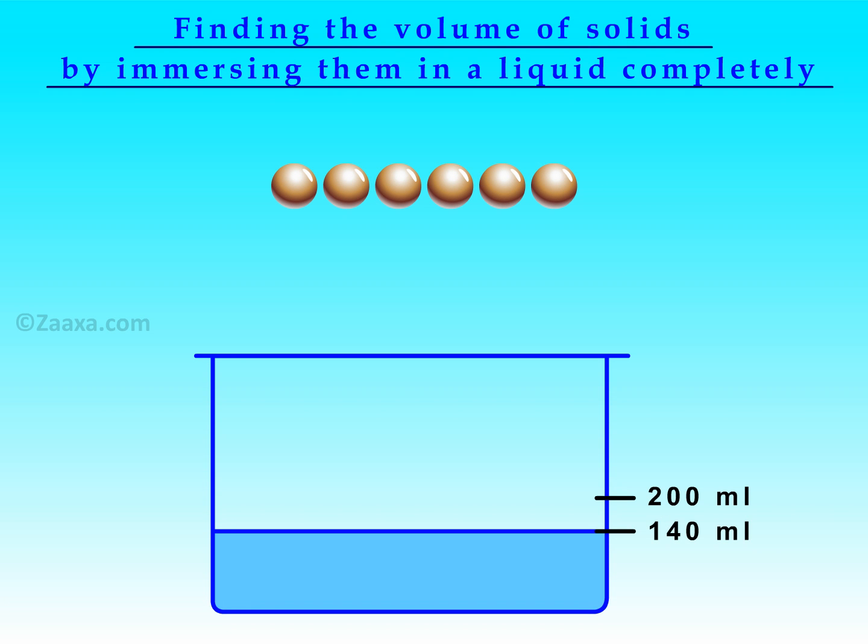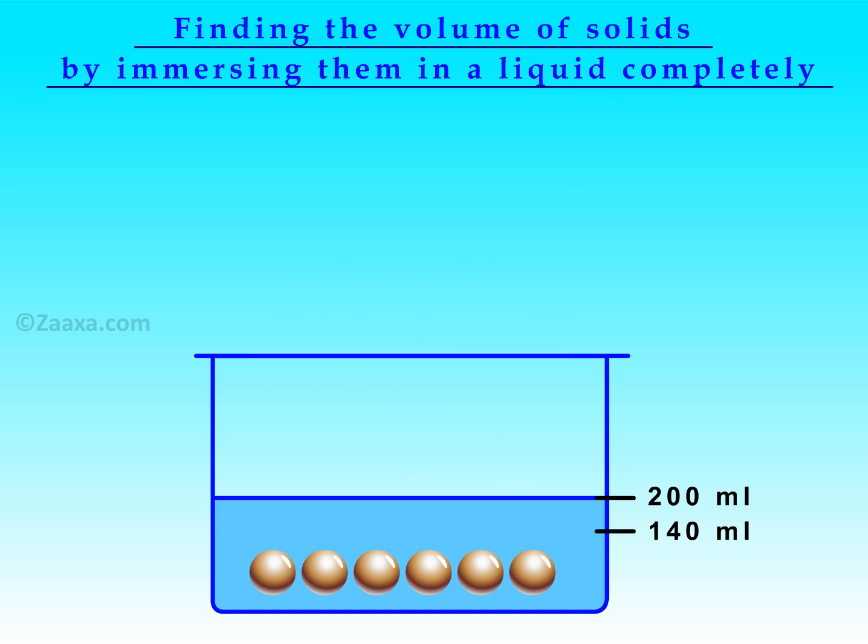We have six small metal balls and a container with one hundred and forty millilitres of water. When we drop the metal balls into the container, the water level rises from one hundred and forty millilitres to two hundred millilitres. We say that the metal balls have displaced sixty millilitres of water. The volume of water displaced is equal to the volume of the six metal balls.